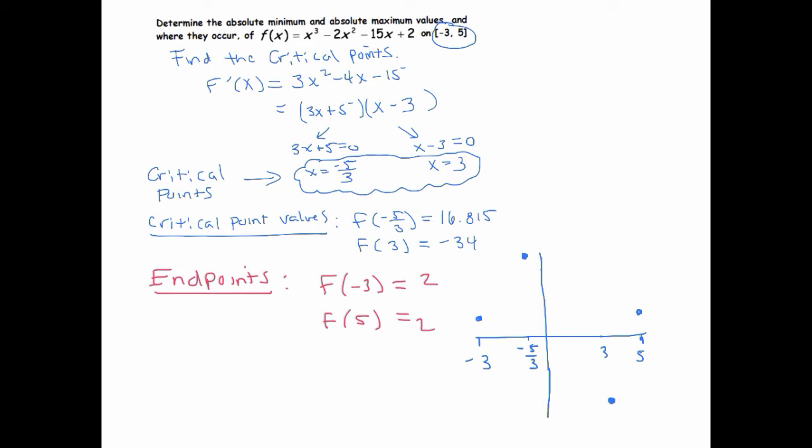And so here, it's easy to see what the absolute min and maxes are. Because we know that the absolute min and maxes have to occur either at those critical points or at endpoints. And our critical point value, the critical point value of negative 5/3 is the biggest one.